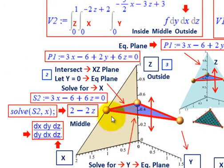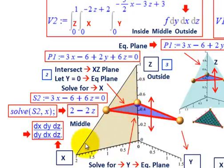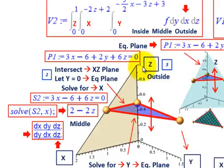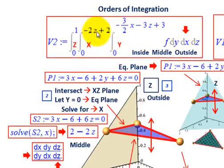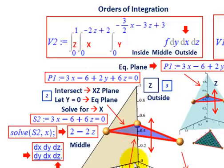So X is going from 0 to 2 minus 2Z. That integral line is sitting on that XZ plane, moving from where we begin at our largest X going up to where X would be 0 at the top. So we're going from 0 to negative 2Z plus 2 for DX. That takes care of our middle integral. The outside one is simple — we're just going from 0 to 1 for Z.